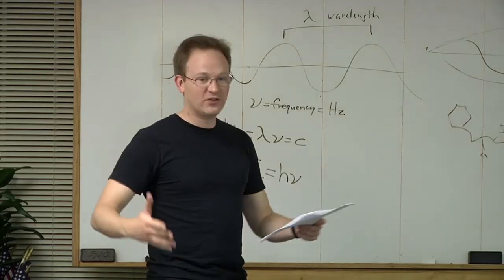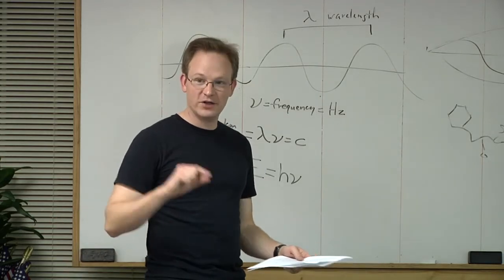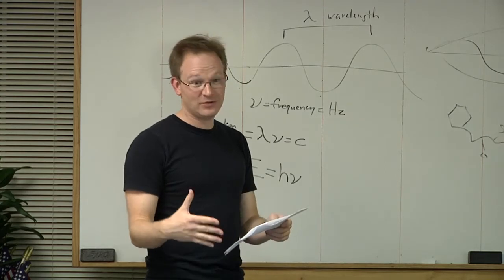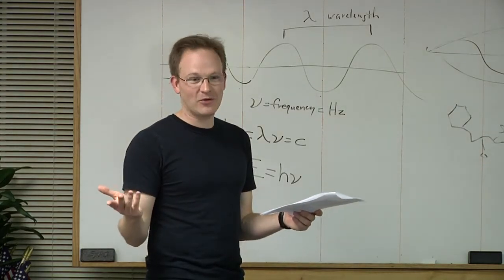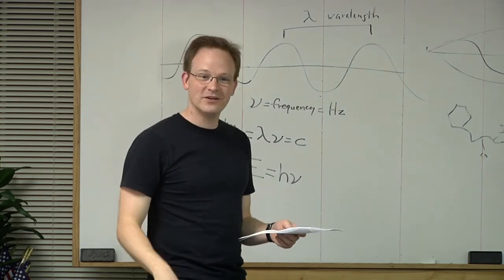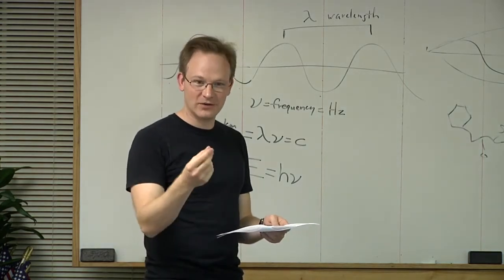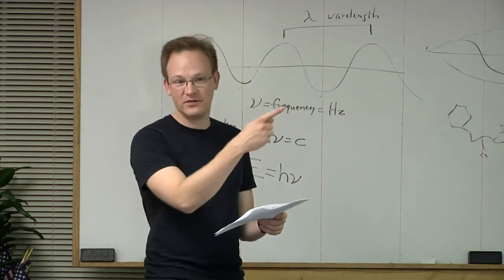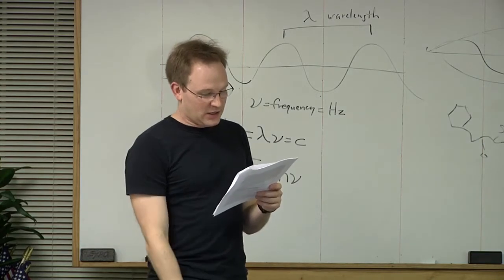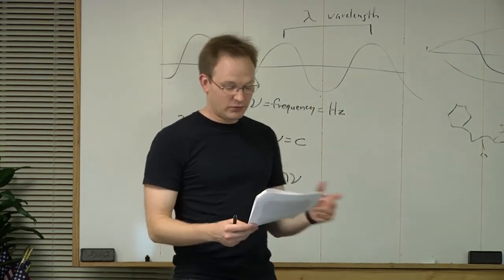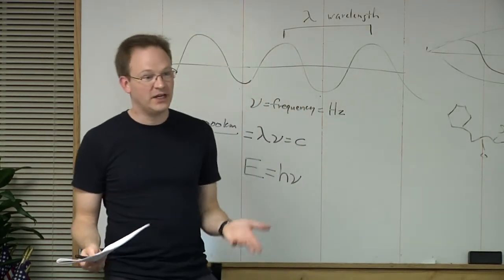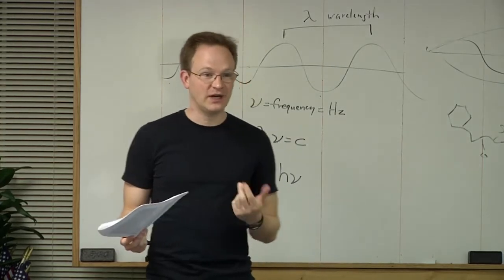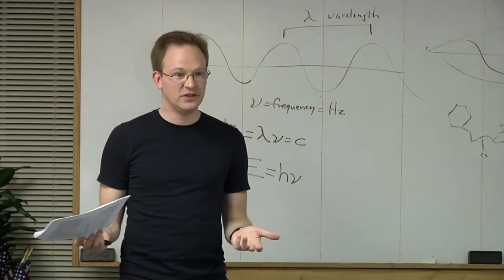Less energetic radiation acts on larger processes; more energetic radiation goes into the small. As we get smaller, we get more powerful — that's what we see when we go from using the power of falling rock or water, to burning something where we're using chemical bonds, to nuclear where we're getting even smaller inside the atom. So there are three main categories: radio and microwaves; light — three kinds: infrared, visible, and ultraviolet; and then X-rays and gamma rays.